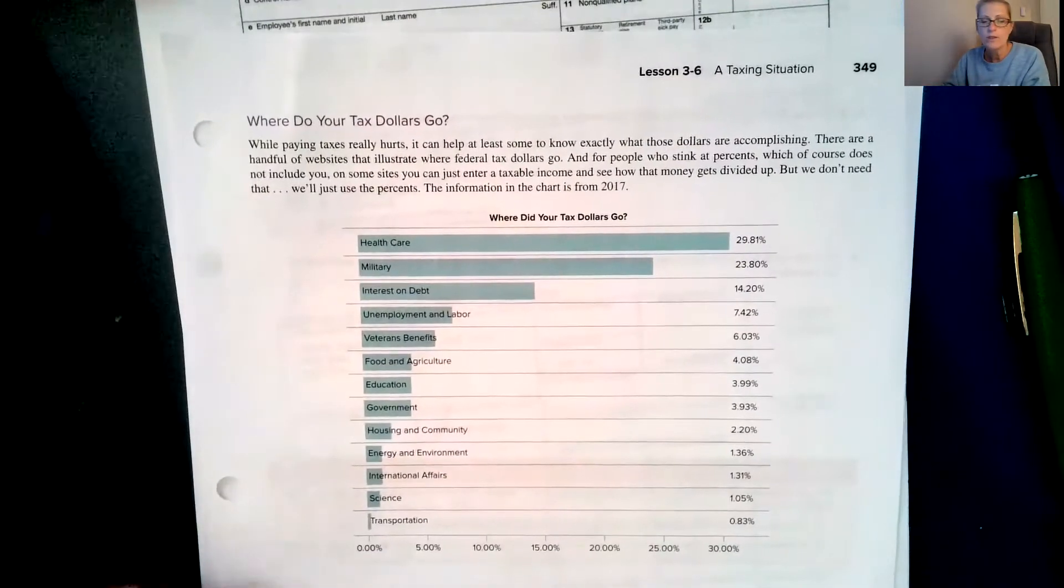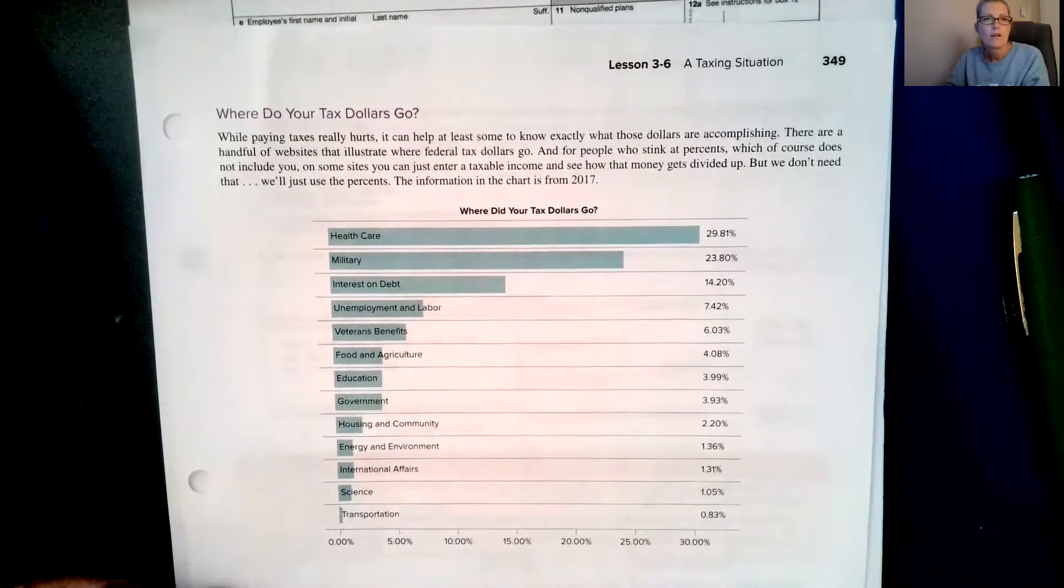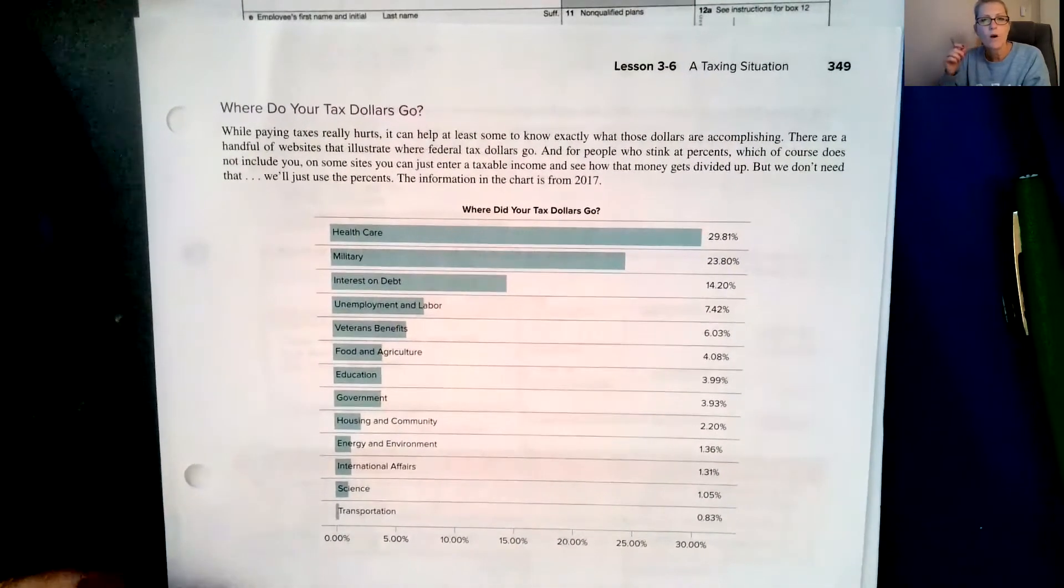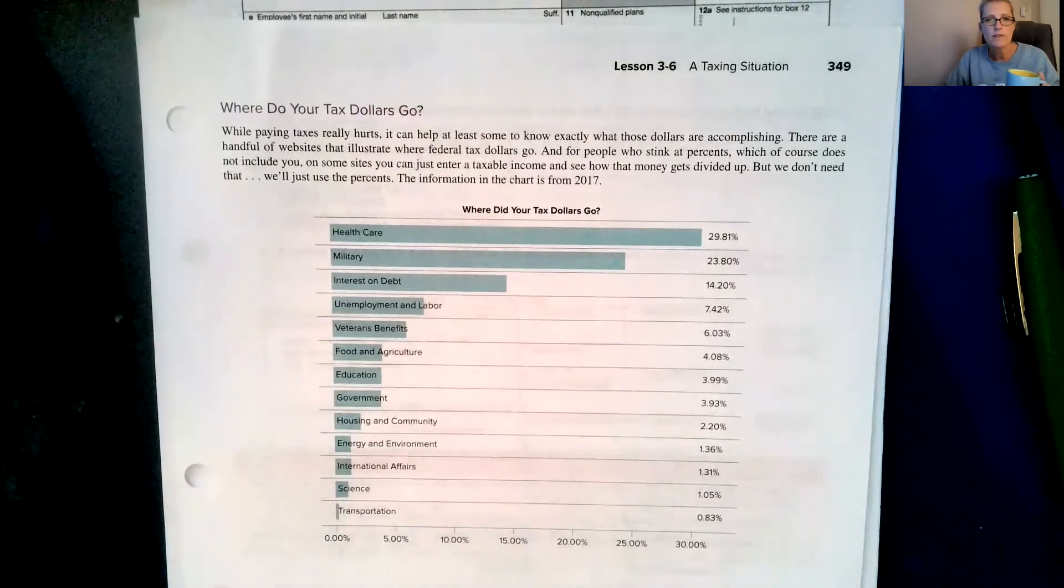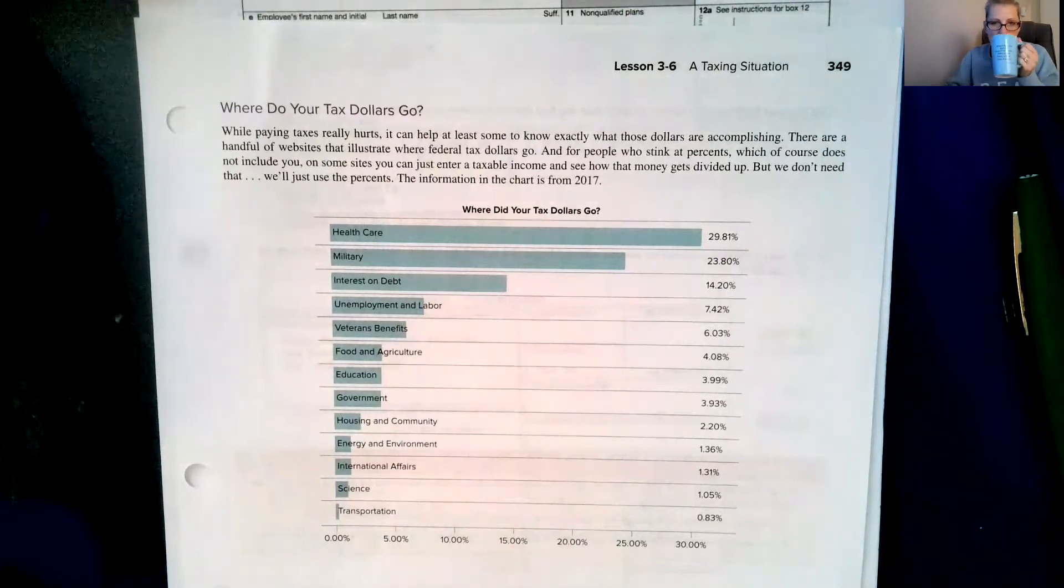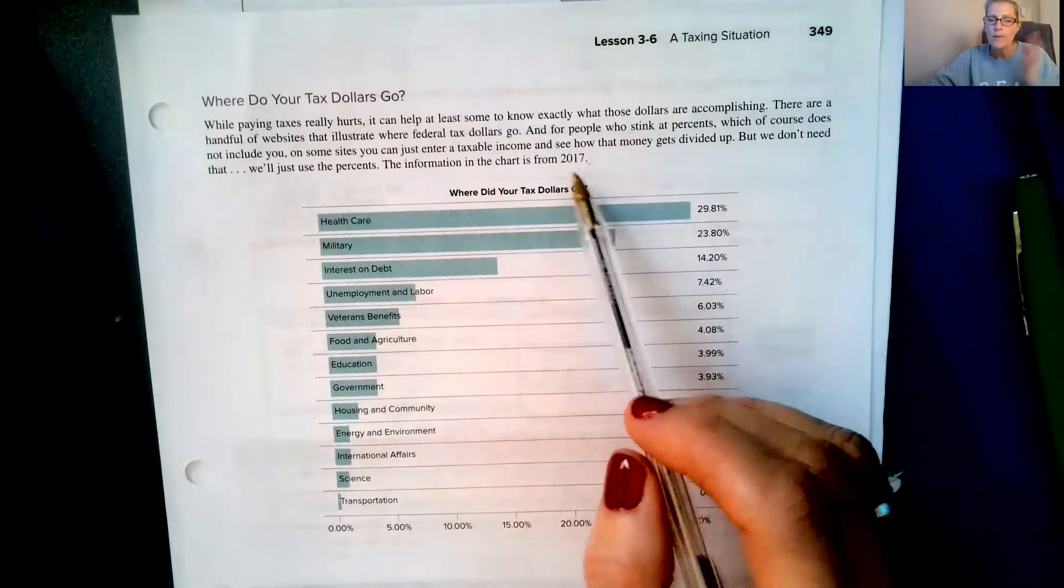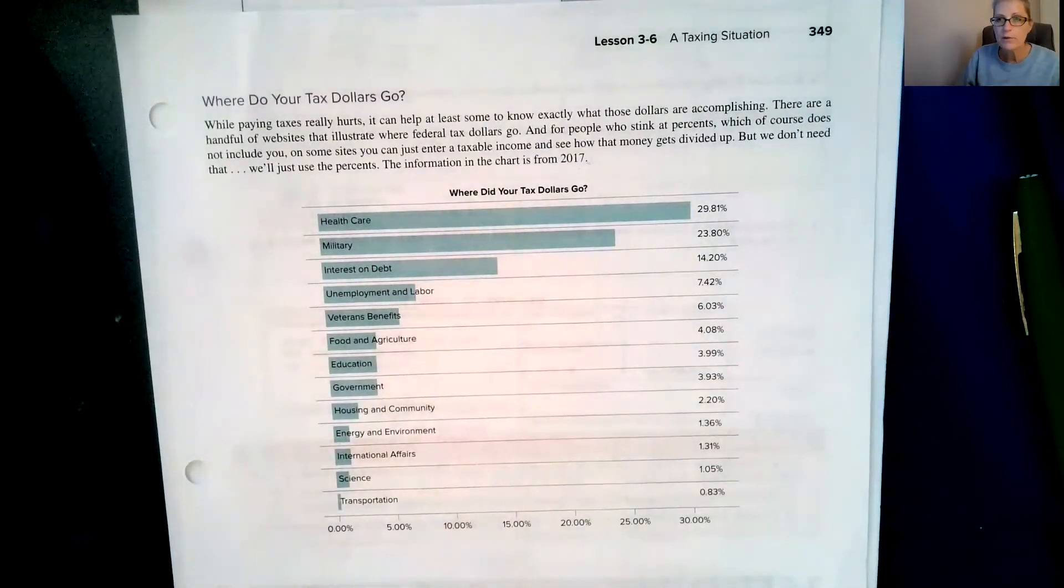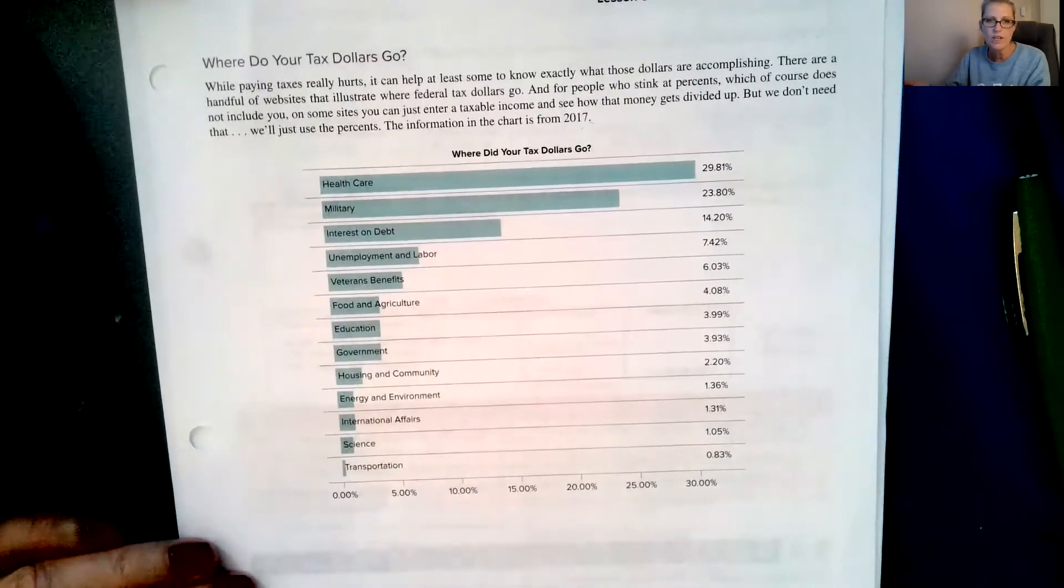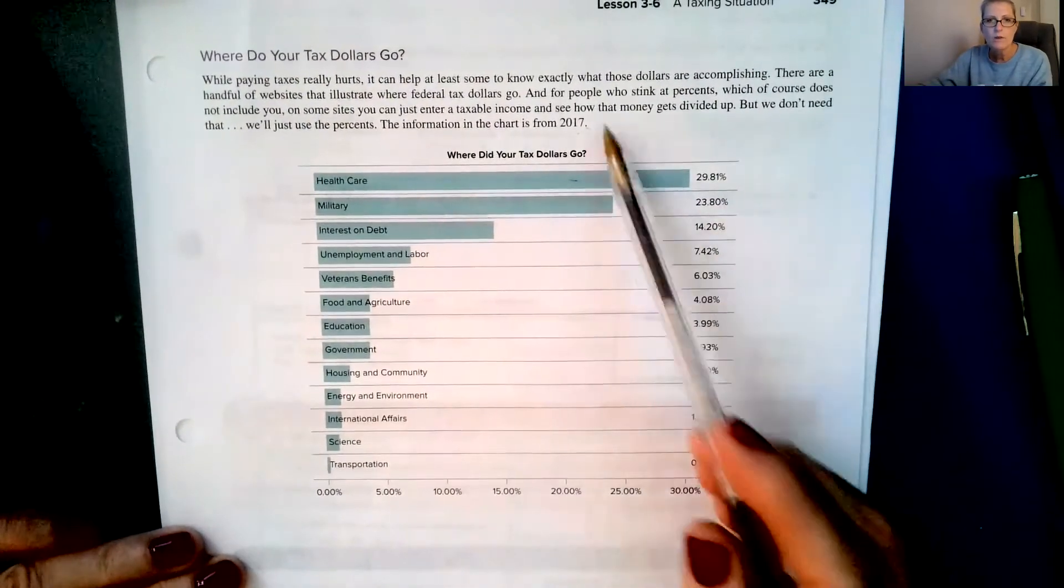So page 349 here says, where do your tax dollars go? While paying taxes really hurts, it can help at least some to know exactly what those dollars are accomplishing. There are a handful of websites that illustrate where federal tax dollars go. And for people who stink at percents, which of course does not include you, on some sites you can just enter a taxable income and see how that money gets divided up. But we don't need that, we'll just use the percents. So this is from 2017, and it's definitely different every year, and it's definitely different with every president.